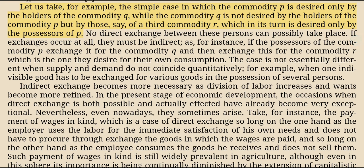Take the simple case in which commodity P is desired only by the holders of commodity Q, while commodity Q is not desired by the holders of P but by those of a third commodity R, which in its turn is desired only by the possessors of P. No direct exchange between these persons can possibly take place. If exchanges occur at all, they must be indirect—the possessors of P exchange it for Q and then exchange Q for R, which is what they desire for their own consumption. Indirect exchange becomes more necessary as division of labor increases and wants become more refined.